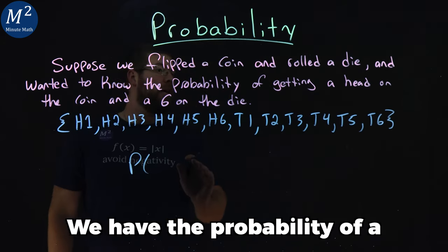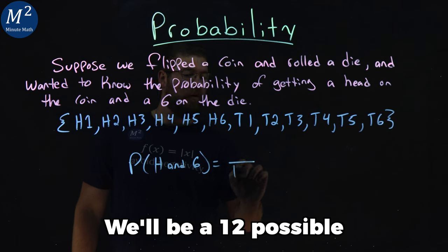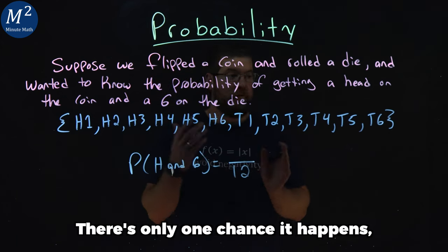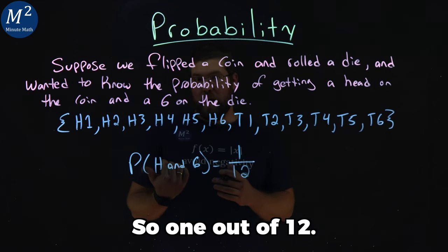So we have the probability of a head and a six would be out of twelve possible options here. And there's only one chance that happens—it's one time, right here. So one out of twelve.